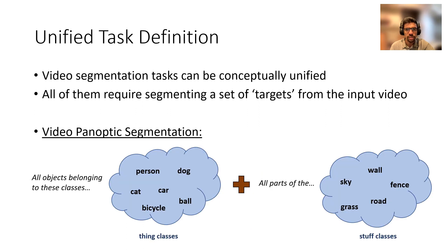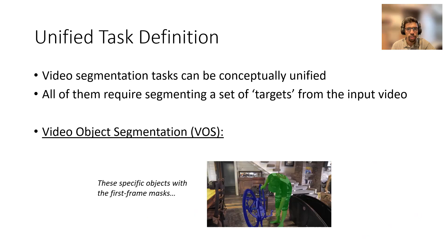For video panoptic segmentation, the targets additionally include non-instantiable semantic classes such as sky, grass, etc. If we look at the popular video object segmentation task, the targets are defined as a specific set of objects for which the first frame masks are given.